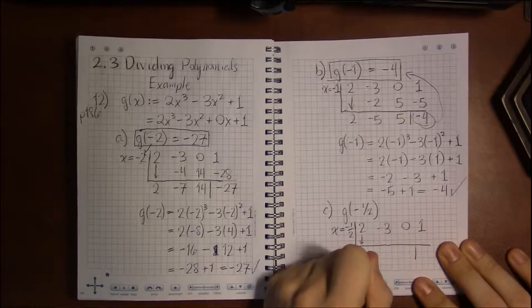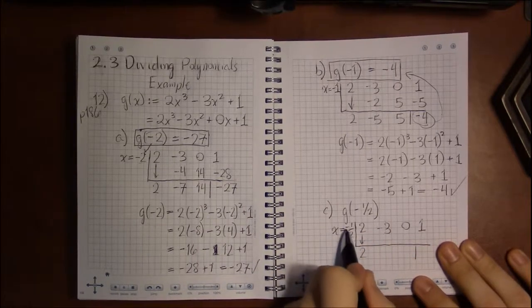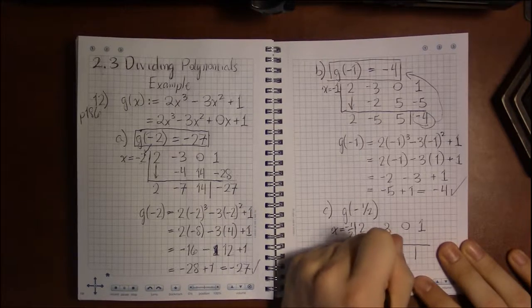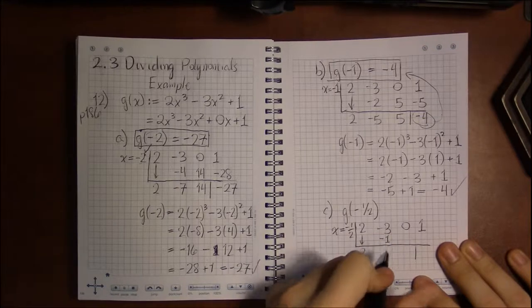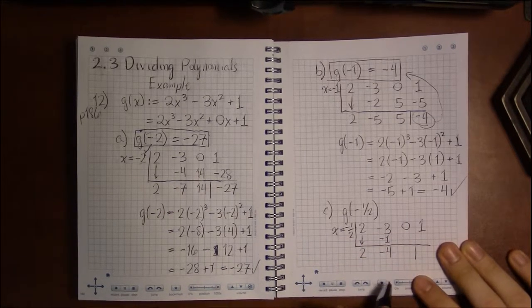And then we start our synthetic division. Drop the leading coefficient. Drop the 2. Minus 1 half times 2 will be a minus 1. Minus 3 minus 1 is minus 4.